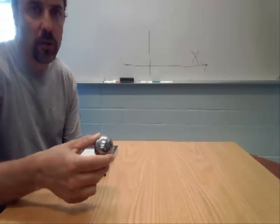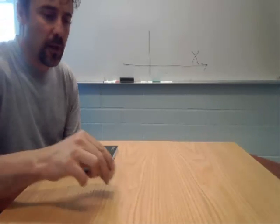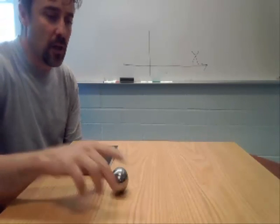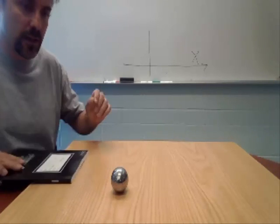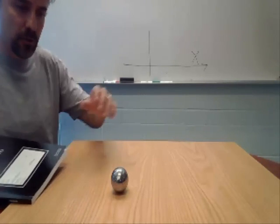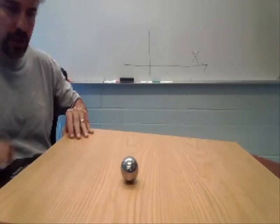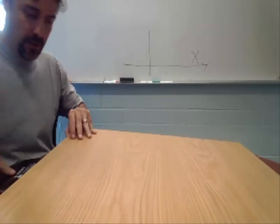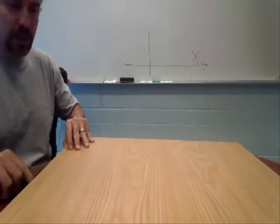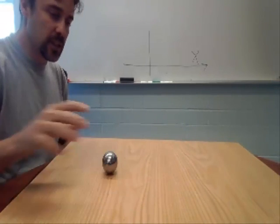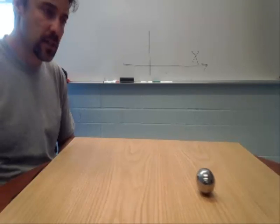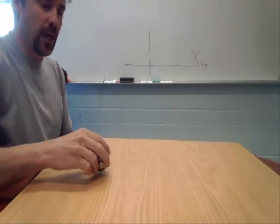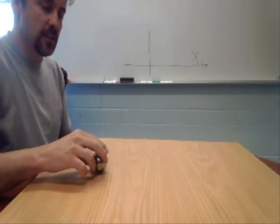Here we have a metal ball on a piece of wood. If you put it down, it just sits there and doesn't move. But if you take a book and put it underneath the wood on one side, then when you release the ball from rest, it starts moving. This is called acceleration.